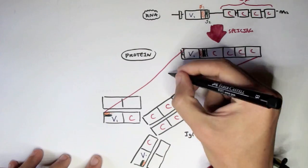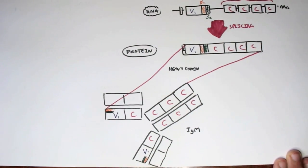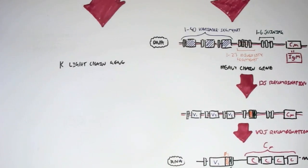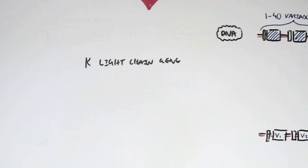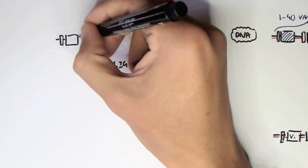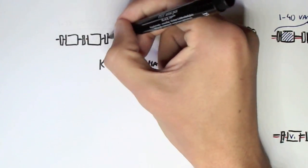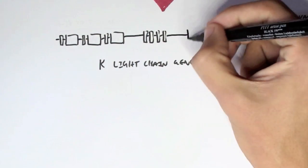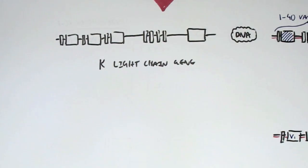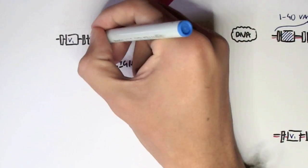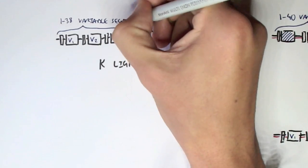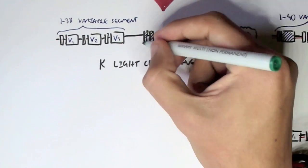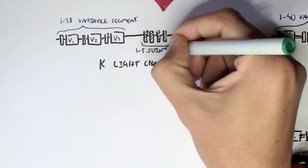For the light chain, we look at the kappa light chain gene. Both the lambda and kappa light chains do not have diversity segments. The kappa light chain gene consists of about 1 to 38 variable segments, 1 to 5 joining segments, and a kappa constant region — no diversity segment.